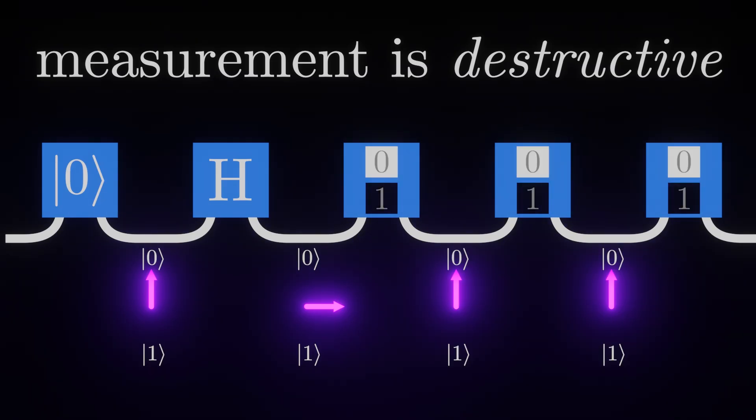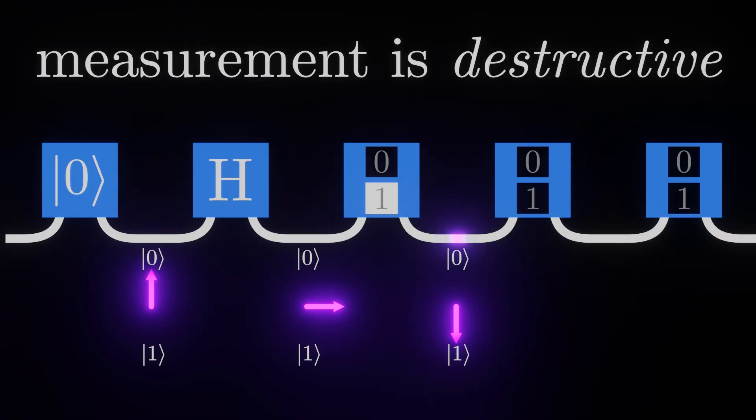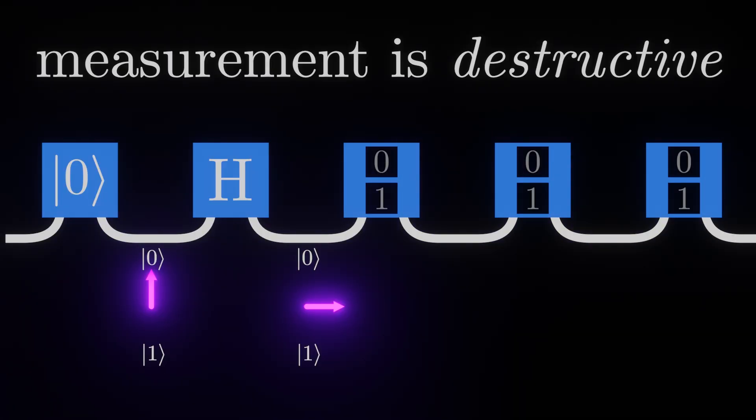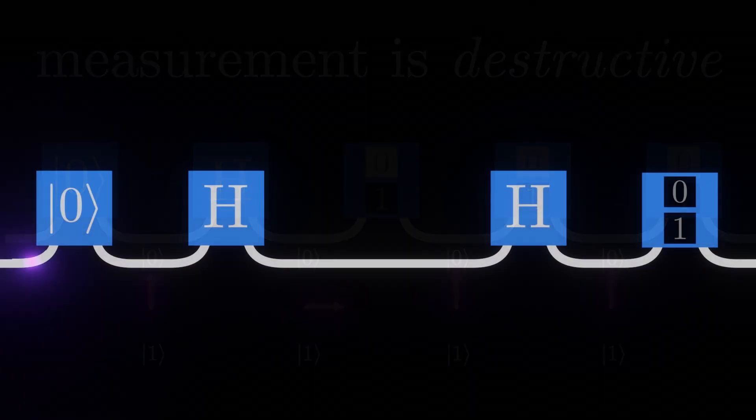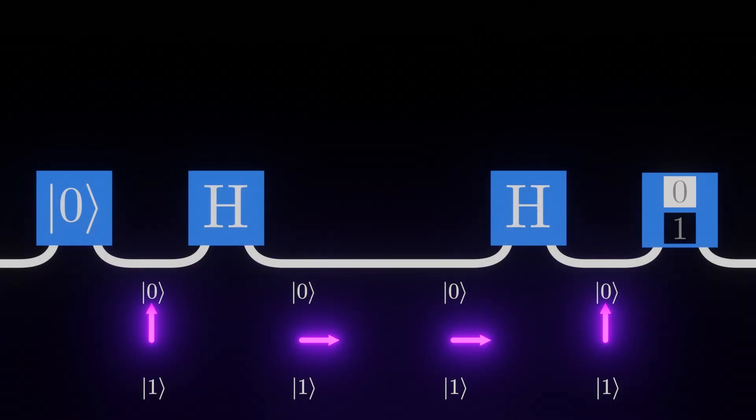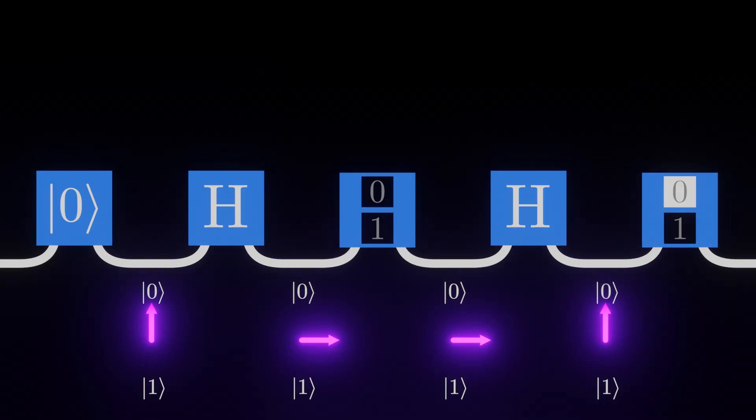This explanation suggests an interesting experiment to prove the properties we found. Before, we saw that passing a qubit through two Hadamard gates causes it to remain unchanged. Let's see what happens when we put a measurement gate between the two H gates.